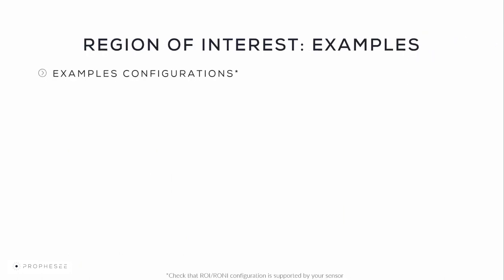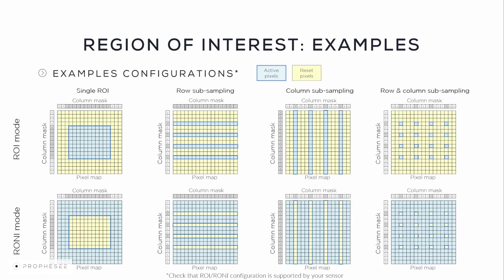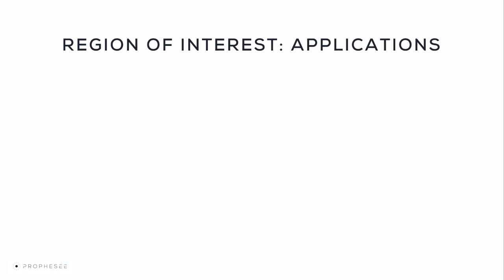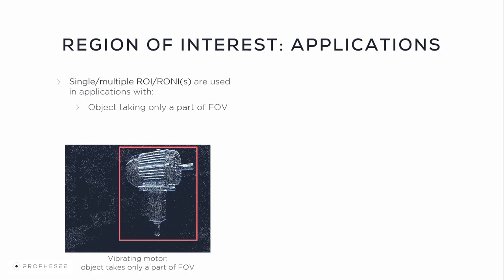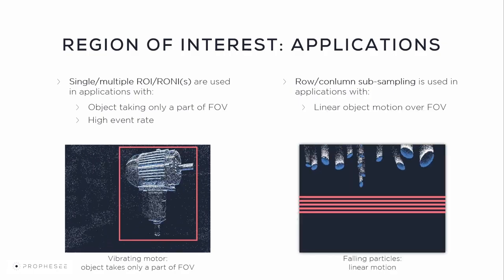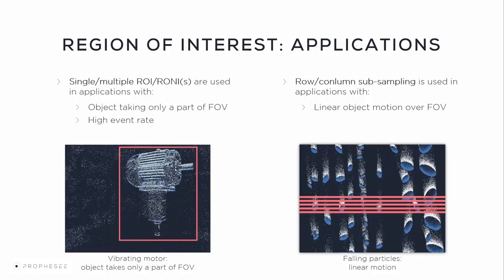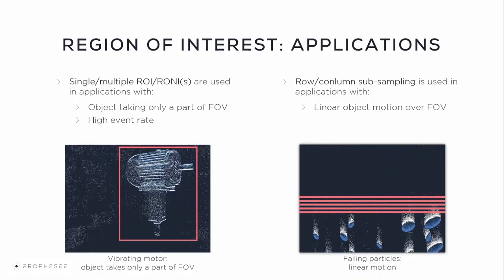One or several ROIs or RONIs can be defined, and a trade-off between the number of active pixels and generated event rate should be considered. We'll show examples including single ROI or RONIs, row subsampling, column subsampling, and row and column subsampling. Setting a single or multiple ROI can be used in applications with objects only taking a portion of the field of view, like a motor example, or with high event rates. Row subsampling is used in applications with linear object motion over the field of view, like falling particles moving linearly, objects on a conveyor belt, or surface inspection with linear motion and high event rate.